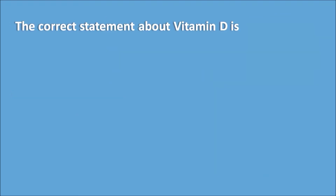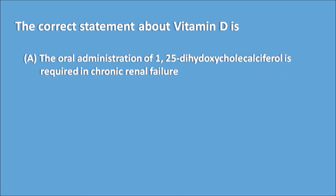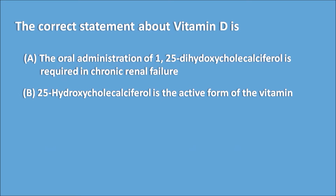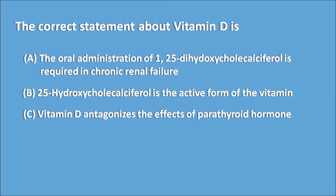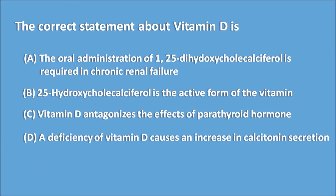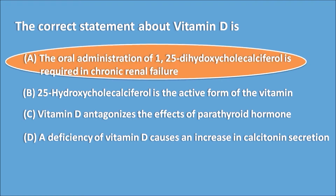The correct statement about vitamin D is: Option A — oral administration of 1,25-dihydroxycholecalciferol is required in chronic renal failure. Option B — 25-hydroxycholecalciferol is the active form of the vitamin. Option C — Vitamin D antagonizes the effects of parathyroid hormone. Option D — Deficiency of vitamin D causes an increase in calcitonin secretion. The right answer is Option A: oral administration of 1,25-dihydroxycholecalciferol is required in chronic renal failure.